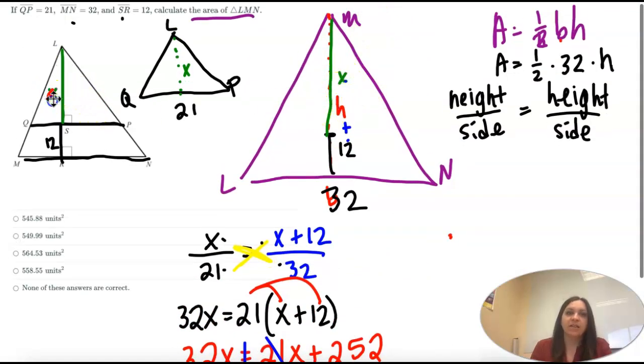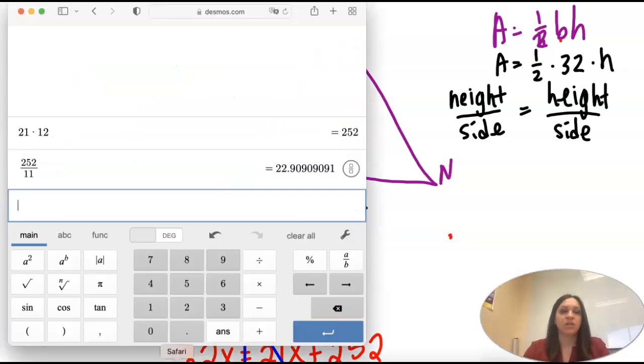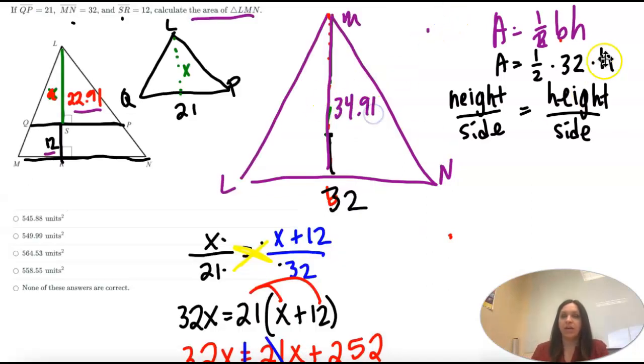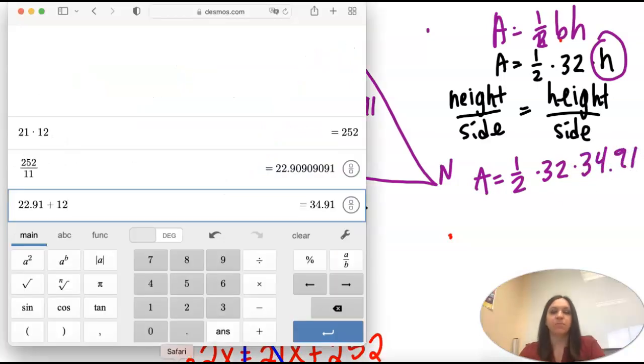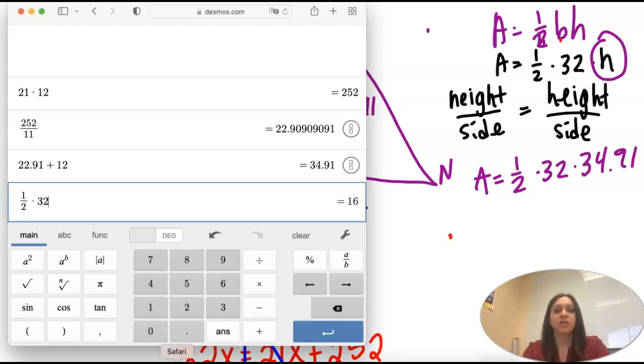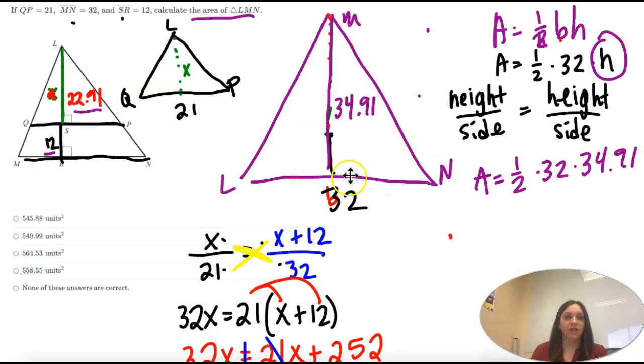So 252 divided by 11 is 22.91. And that's X. That's right here. 22.91. So now I'm going to erase this. The whole height of this triangle is 22.91 plus 12. So 34.91. So 34.91. And that is H. So now my area is 1 half times 32 times 34.91. So let's see what we get. 1 half times 32 times 34.91. So 558.56 is our rounding. But 55. Close enough. Sometimes it might be off one or two decimals at the very end.